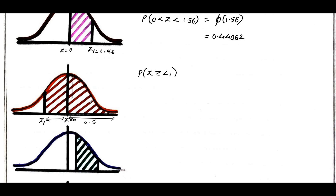So if you shift this to that side, it will become a positive value. Directly I can write the probability of z greater than or equal to z1 as 0.5 plus phi of z1. This is the direct formula — if a problem says 'at least', you can make use of this.